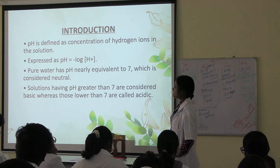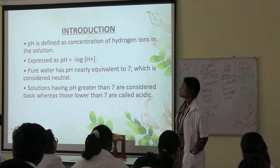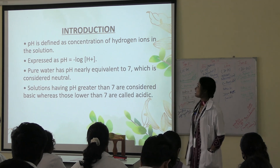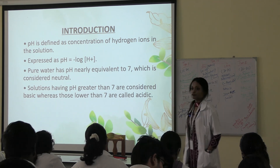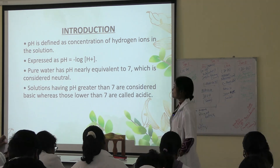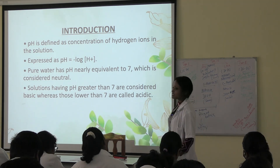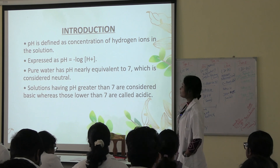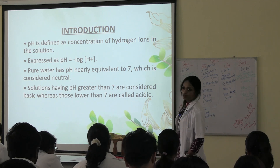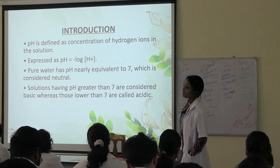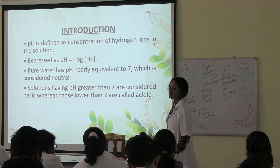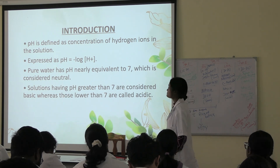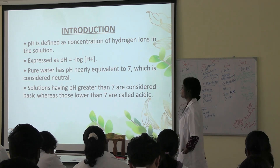pH is defined as the concentration of hydrogen ions in the solution. It is expressed as pH equal to minus logarithm of hydrogen ions, H plus ions.